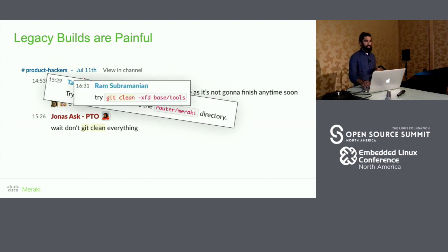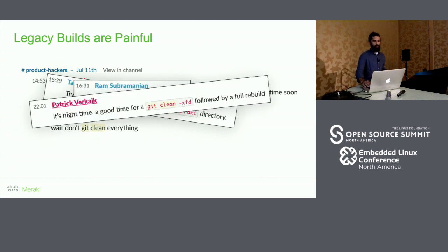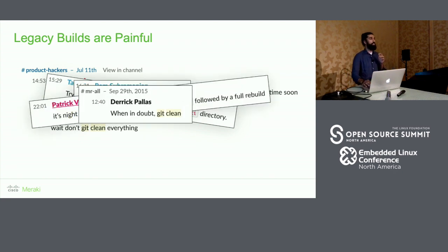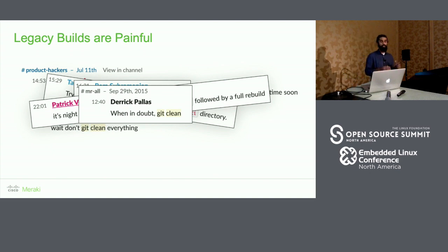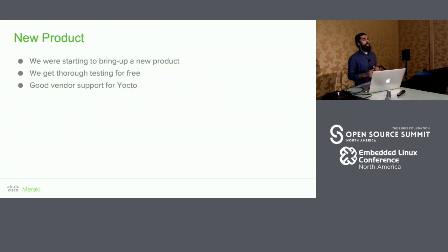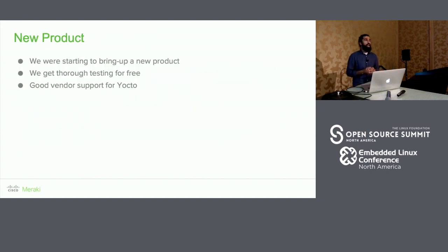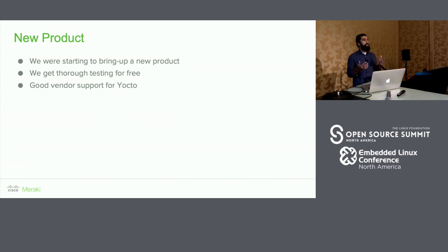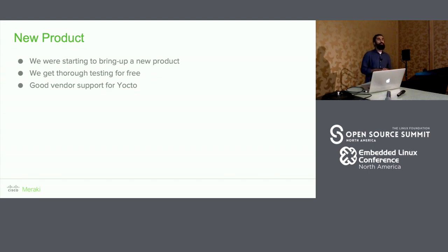The git clean problem is real — here are examples I found in Slack where people have been suggesting git clean over and over, all the way back to 2015 when we first started using Slack. Not only that, we also had an opportunity: we were working on a new product, so we'd get a lot of testing for free, including things not covered by automated tests. And the vendor we were working with had good support for Yocto.